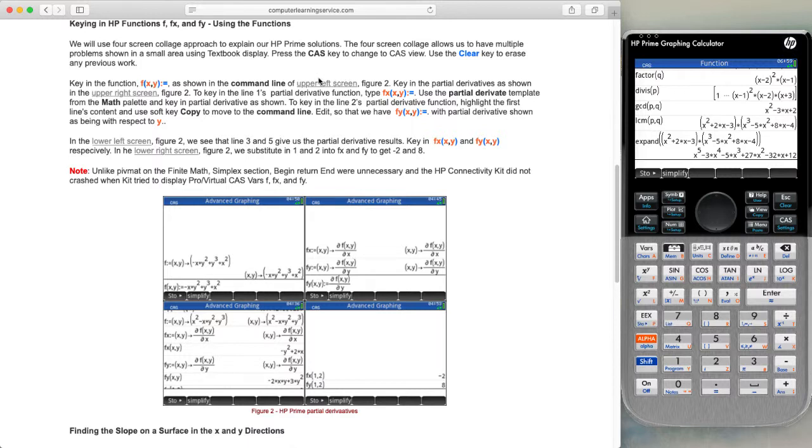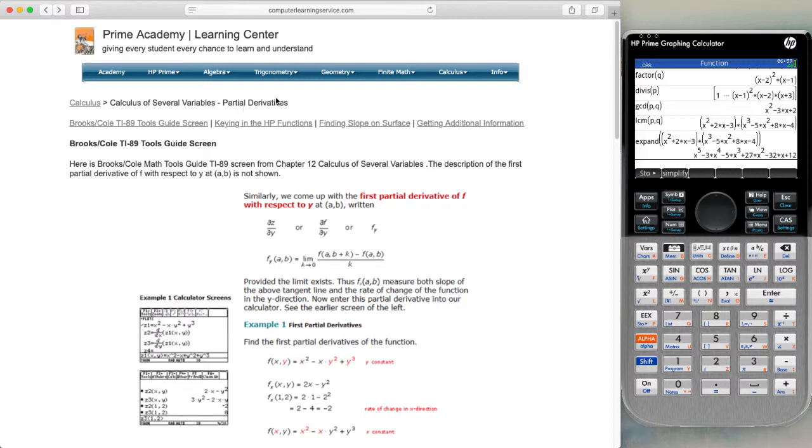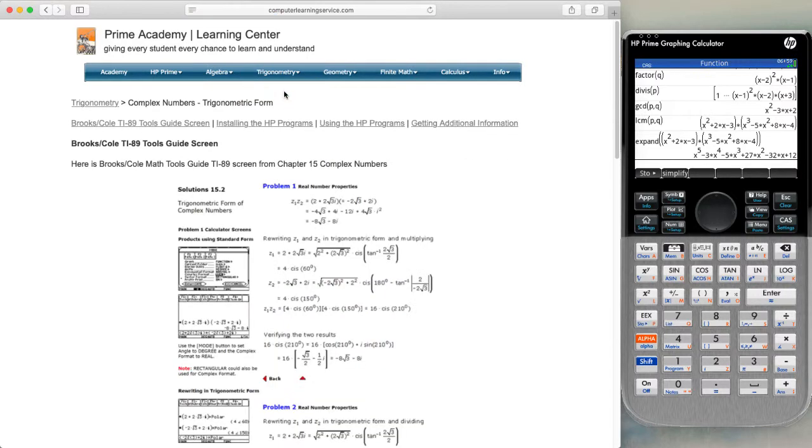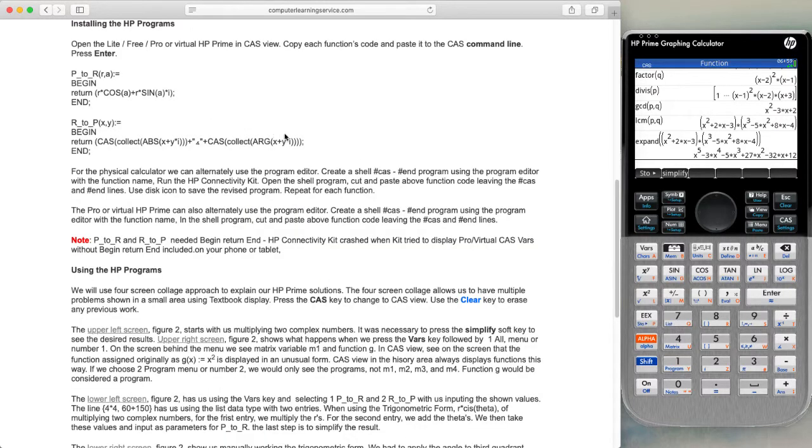Returning to our web page and going back to our menu system, we now look at the trigonometry complex numbers to see how to add these functions. Here we see the T89 with this polar and rectangular. We add these functions to the HP since it does not have these functions built in.